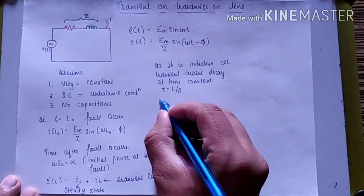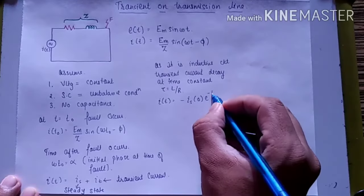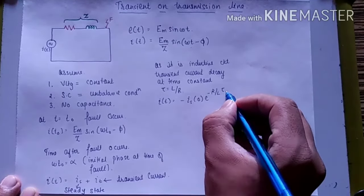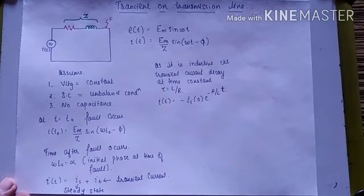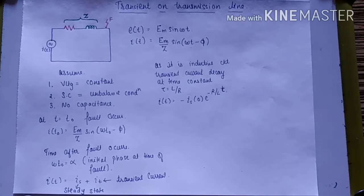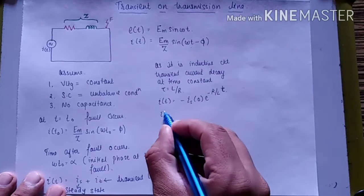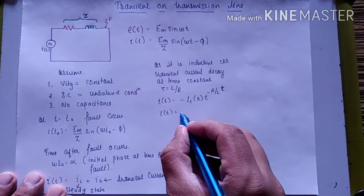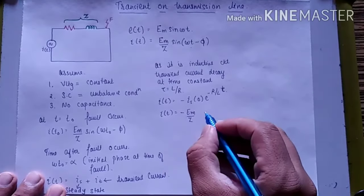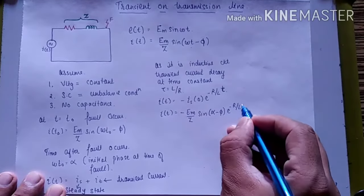The transient current is I_t(t) = −Is(0)·e^(−R/L·t), where Is(0) = (Em/Z)·sin(α − φ). So I_t(t) = −(Em/Z)·sin(α − φ)·e^(−R/L·t).